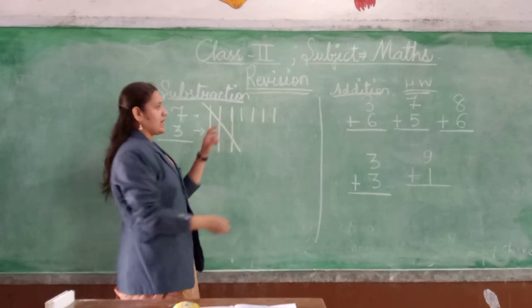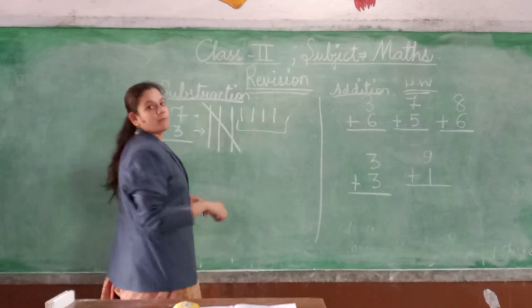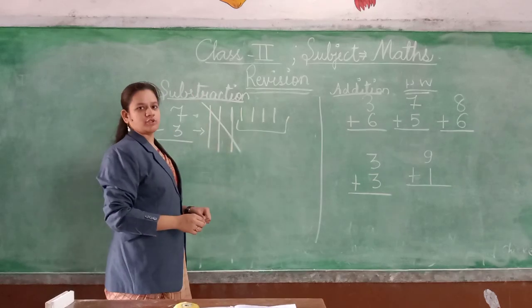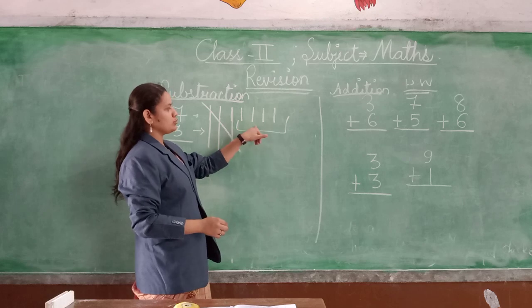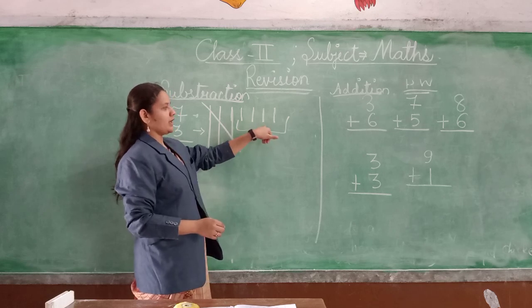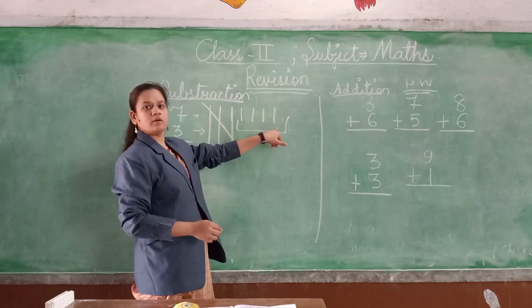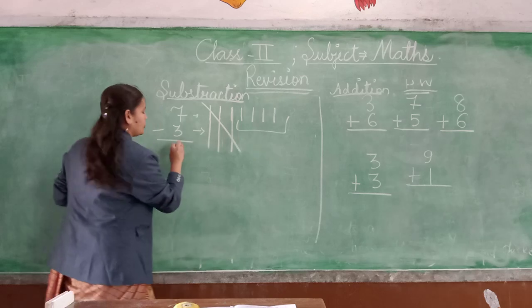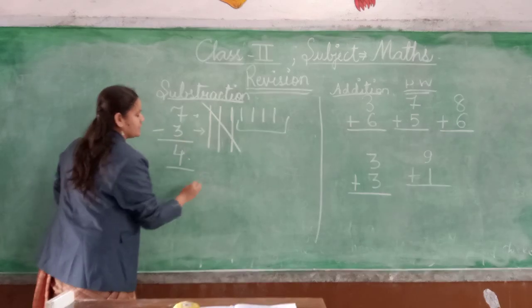Now we will count the remaining lines. Count them. Let's count: 1, 2, 3, and 4. What comes? 4.